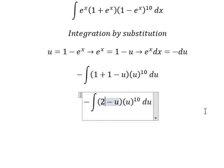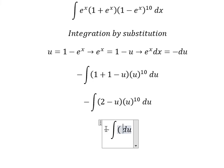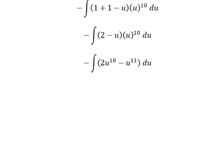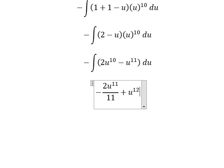This one gives us 2 times u to the power of 10. Now we have the final answer. The integral of u to the power of 10 gives u to the power of 11 over 11. Because we have the negative, this becomes positive.